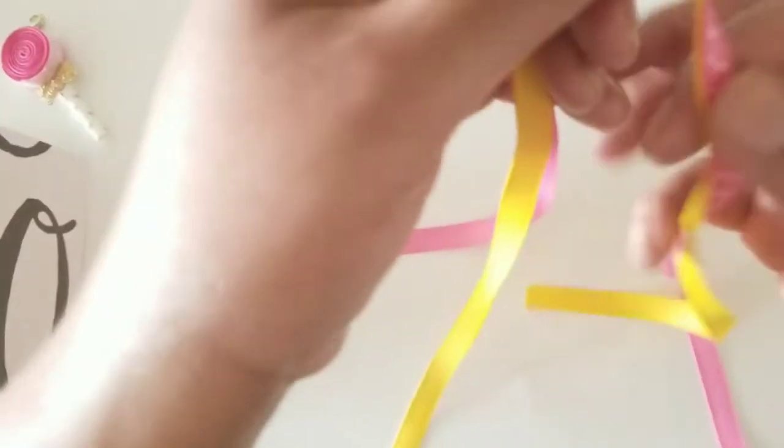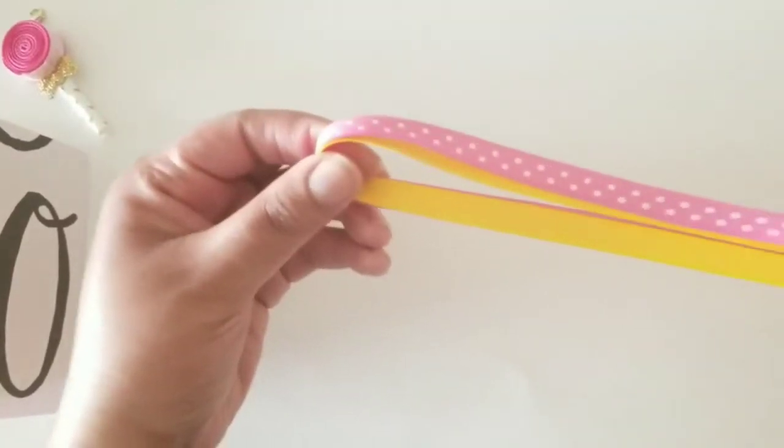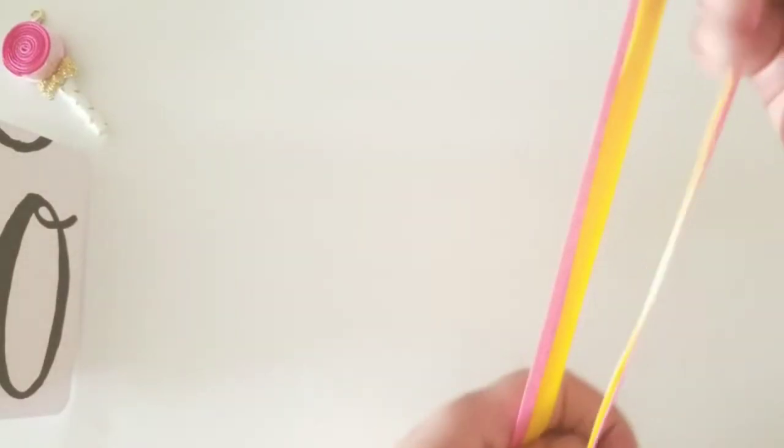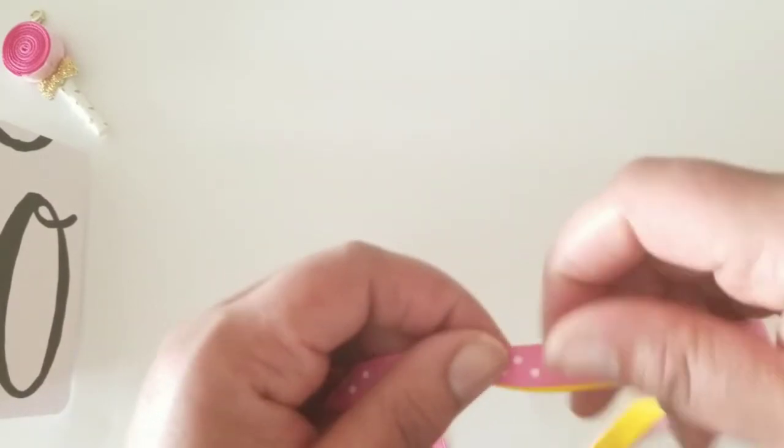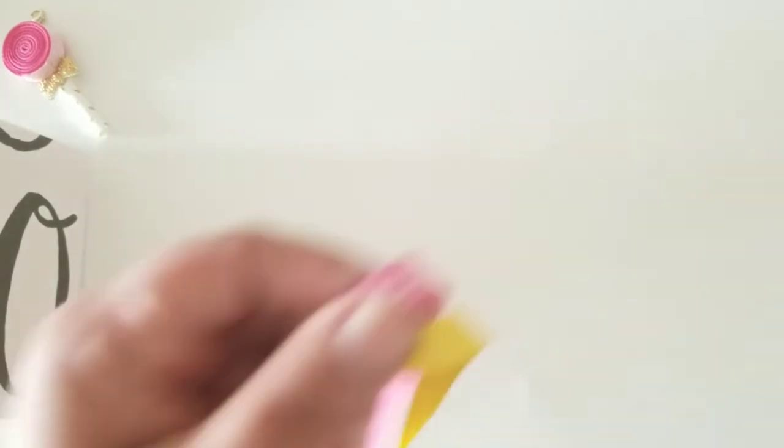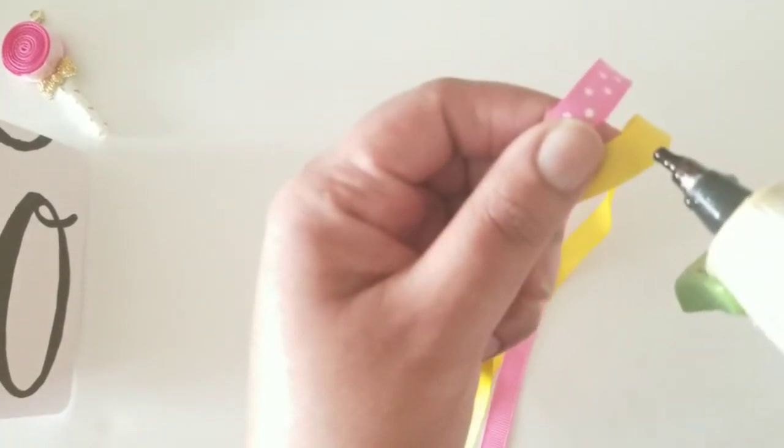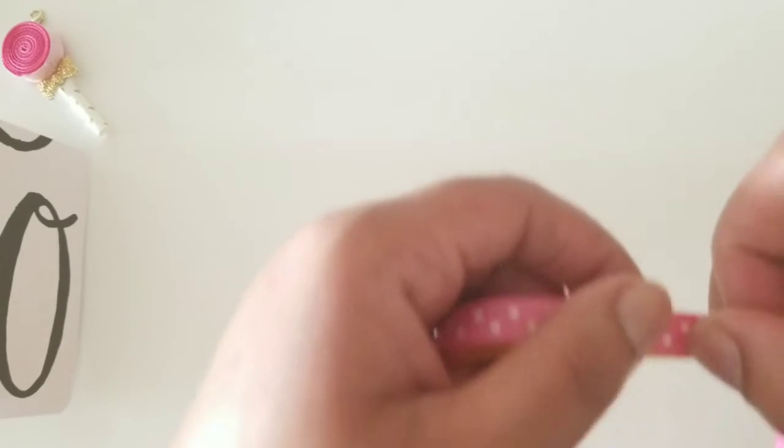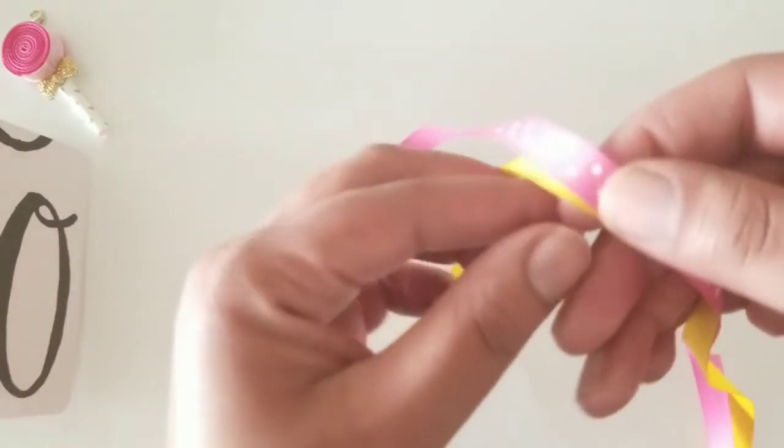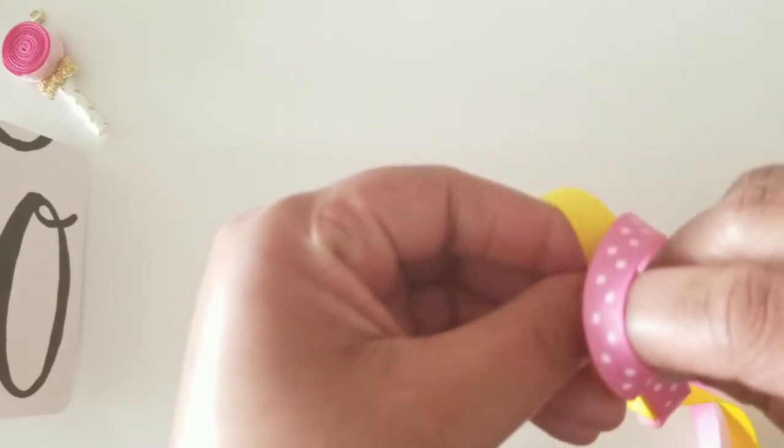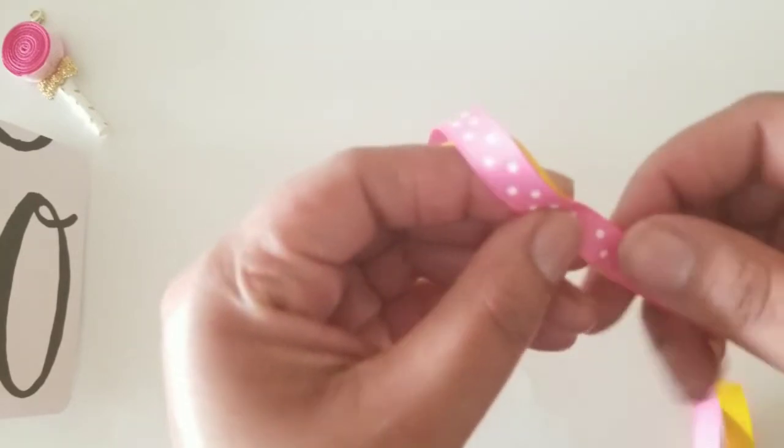You want to find the center. If you're going to double your ribbon and you want to kind of find the center. I like to put just a little small dab of glue. And we're going to lay them directly on top of each other.